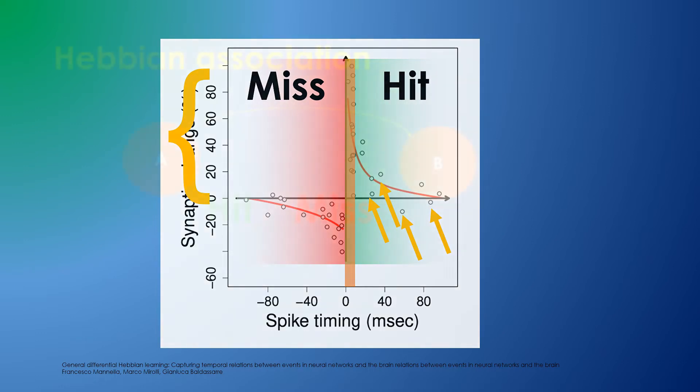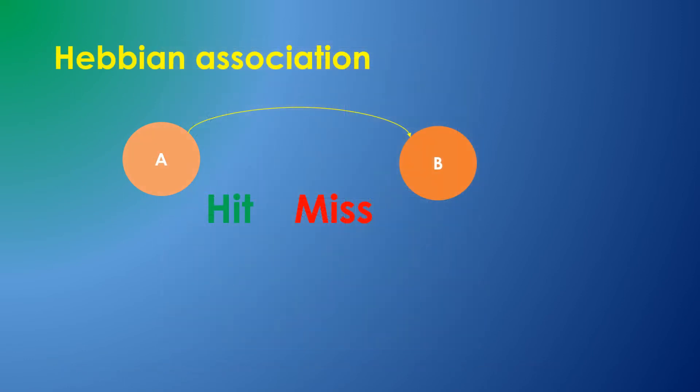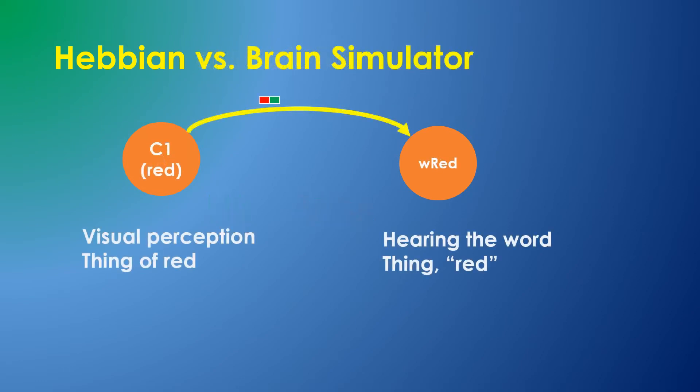The primary difference between Hebbian learning and association inside the knowledge store is that instead of keeping just a synapse weight, the knowledge store links record the raw counts of hits and misses. When Sally sees a red object, the color thing fires continuously. If she simultaneously hears the word 'red,' a connection is created or the hit count is incremented.